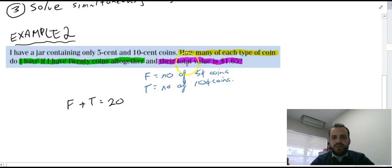Their total value is $1.65. So that means, think about it for a moment. The number of 5 cent coins is F, the number of 10 cent coins is T. The dollar value is $1.65. And that's if I take the 5 cent coins, the number of 5 cent coins, 0.05 times F, plus 0.10 times the number of 10 cent coins should equal $1.65. So what do I have here? Now I've got two equations. F plus T equals 20, and 0.05F plus 0.1T equals $1.65. Finally, solve it.